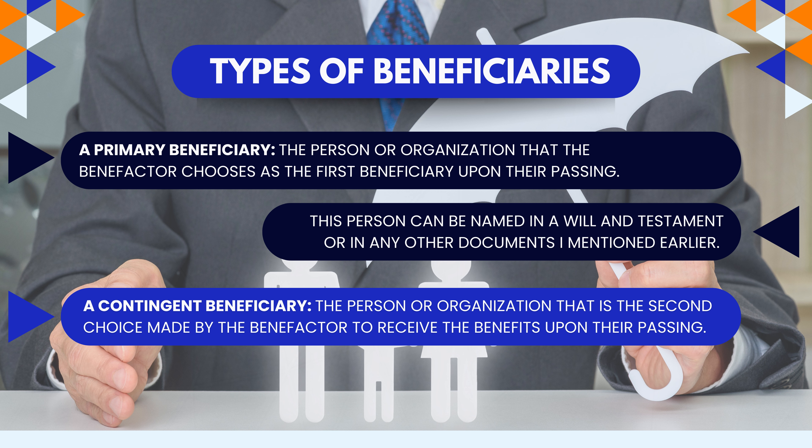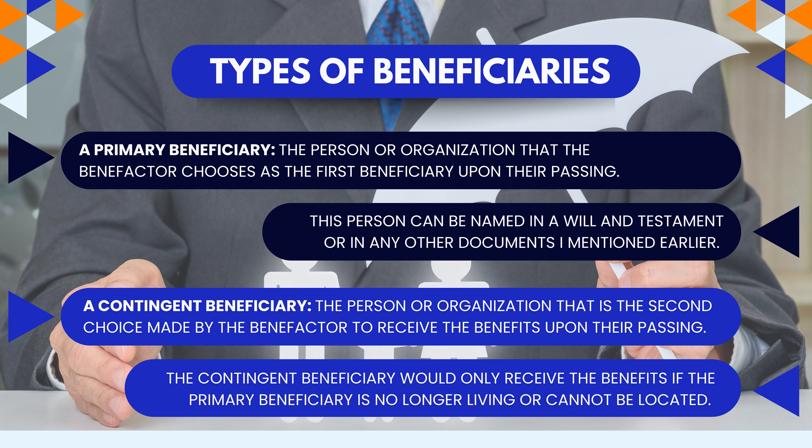Types of beneficiaries. There are two types of beneficiaries. A primary beneficiary is the person or organization that the benefactor chooses as the first beneficiary upon their passing. This person can be named in a will and testament or in any other documents mentioned earlier.